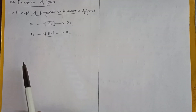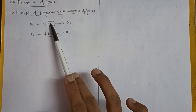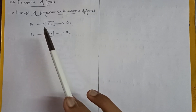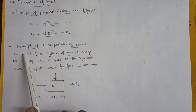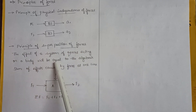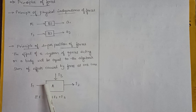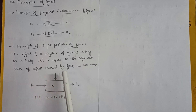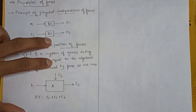There are a few principles of forces. The principle of physical independence of forces states that the action of a force applied on a body is not altered by another force applied on a different body — if you apply F1 on body 1 and F2 on body 2, F2 doesn't affect the motion caused by F1. The principle of superposition of forces states that the effect of a system of forces acting on a body equals the algebraic sum of the effects caused by each force individually — applying all forces at once gives the same result as applying them one at a time.